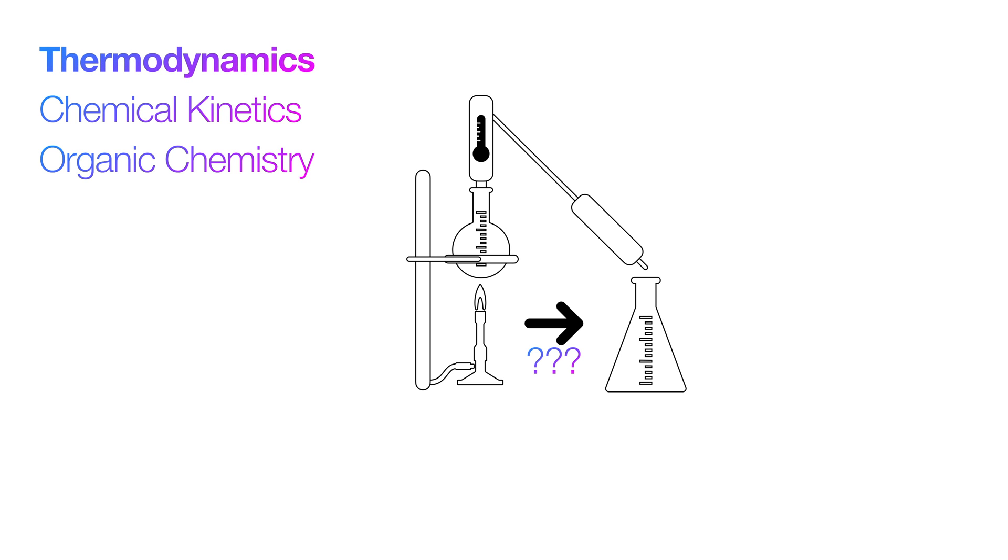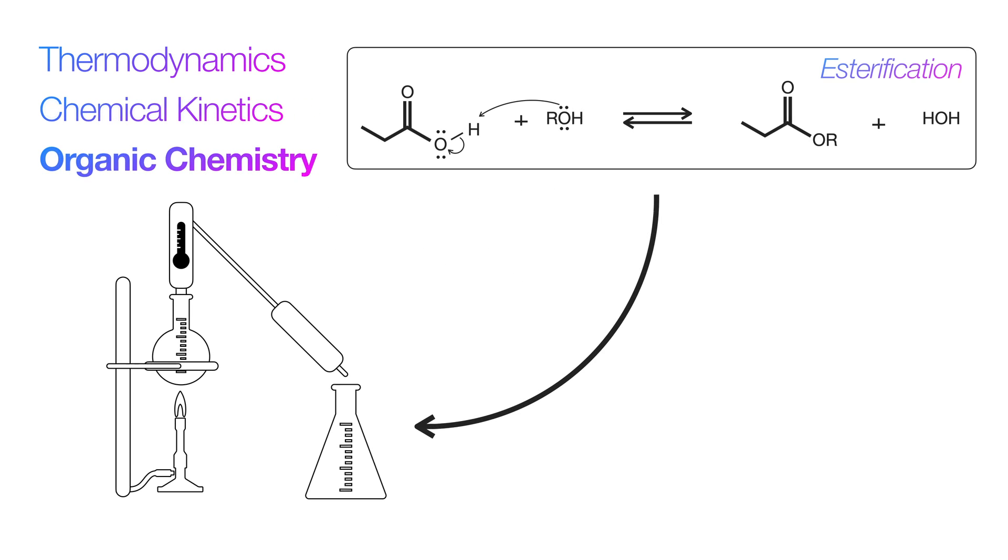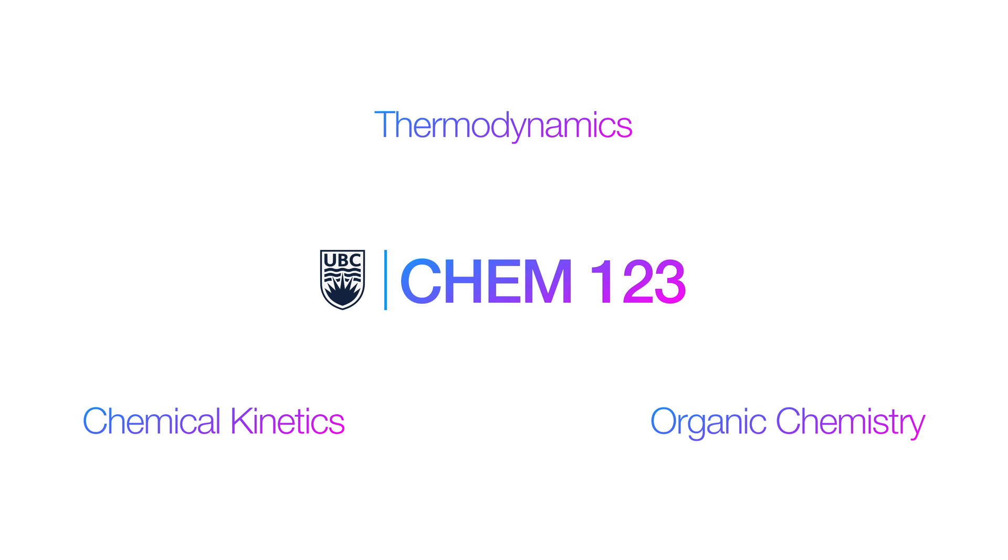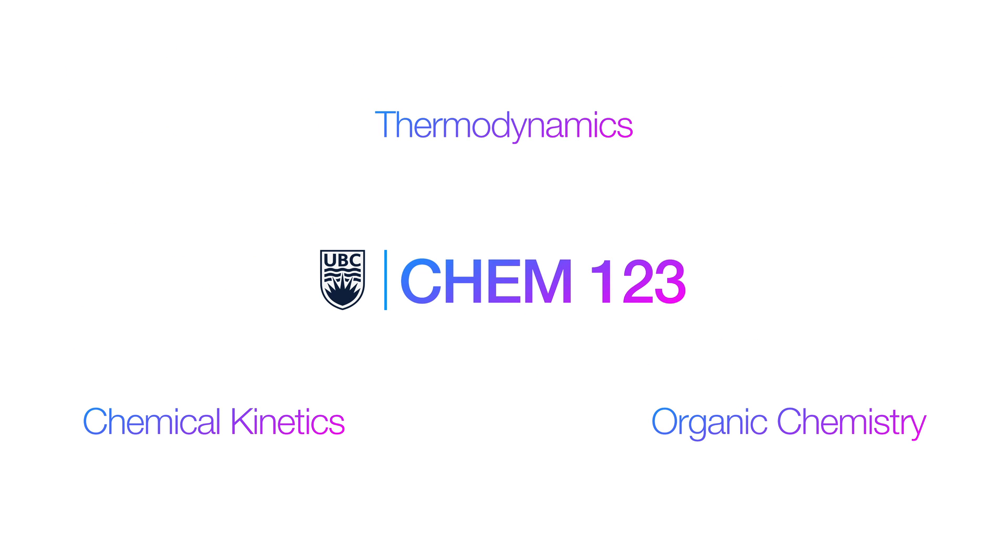Thermodynamics tells you whether a reaction can happen and the price you pay for it. Kinetics is all about the speed of your reaction and the ways you can control it. And last but not least, organic chemistry tells you what exactly is reacting and how you can control the reaction. And as a taste of what's to come, let's see what this trinity looks like in action.